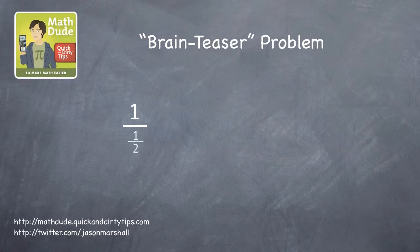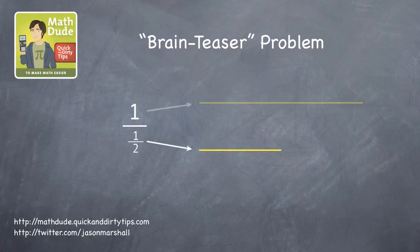Okay, now let's look at the case when the denominator is 1 half instead of 1. How many times does 1 half go into 1? In other words, how many halves does it take to make a whole? 2.